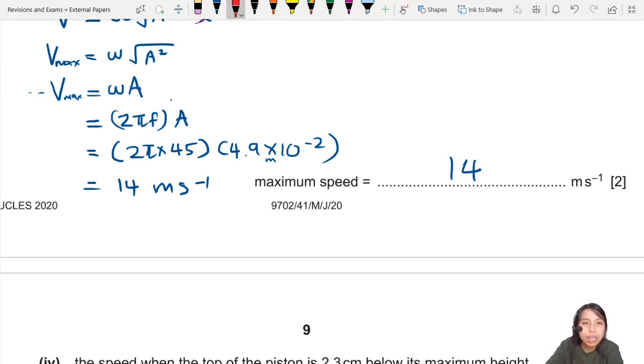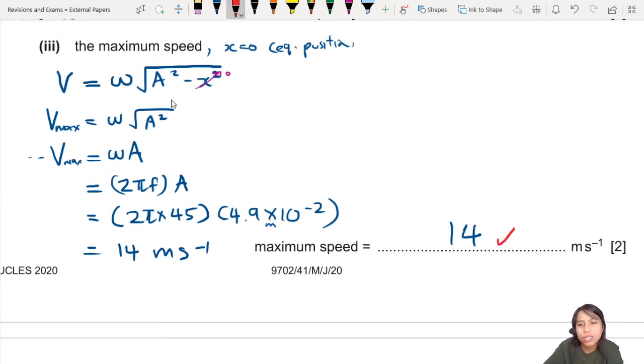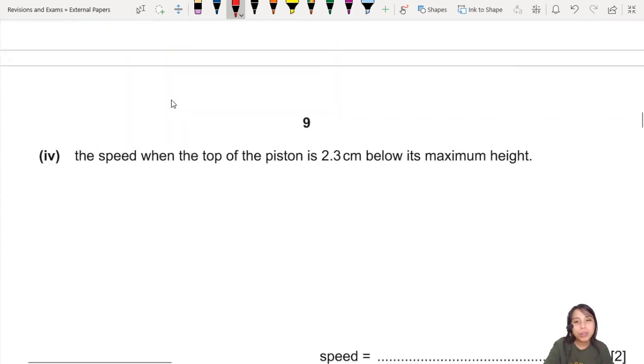Where do all the marks come from? First one comes from equation. Final answer, just give yourself a mark if you got it correct. The first mark comes from you knowing V_max is ωA and omega is 2πf. If you ever forget, just use the formula. It's given in the data and formula sheet at the start of every booklet.